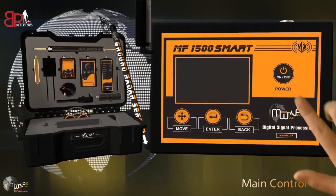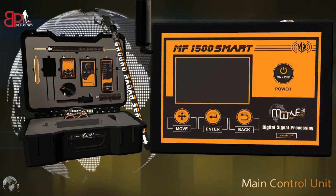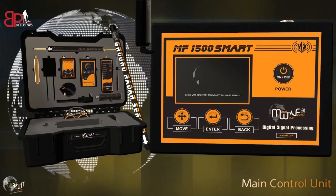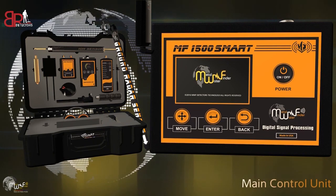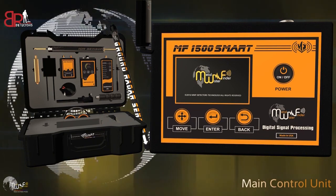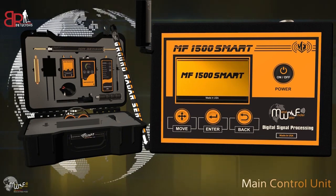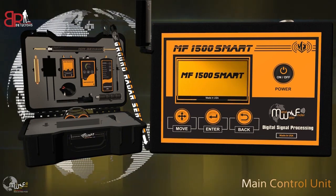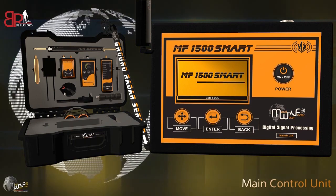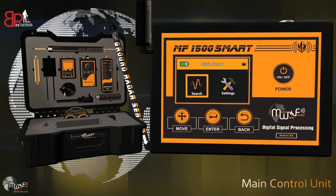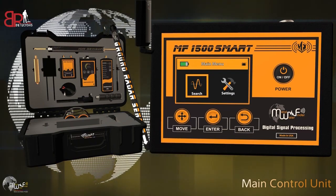Secondly, how to operate the device and adjust its settings. Turn on the device by pressing and holding the power button for a few seconds, then wait for the welcome interface to finish. The main menu will display a battery indicator, search menu, and settings menu.